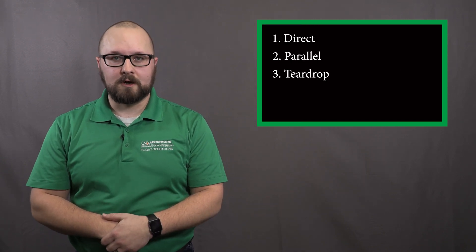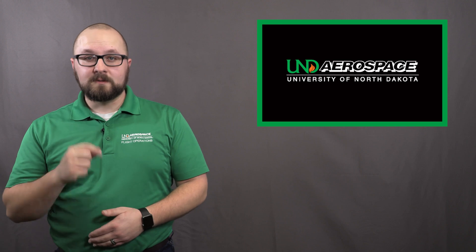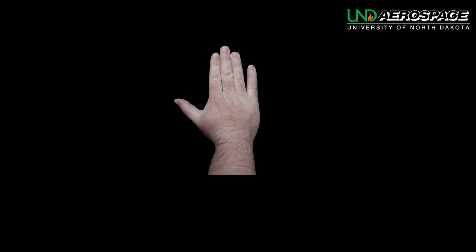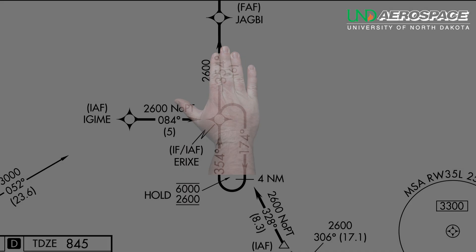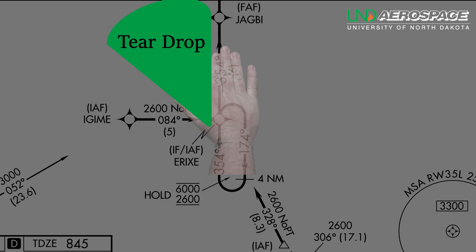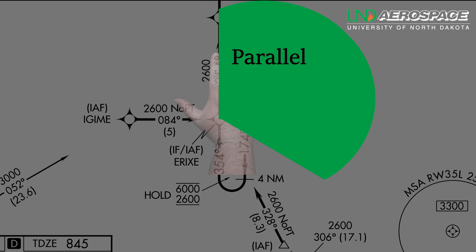The three methods are direct, parallel, and teardrop. To help simplify the decision-making process, I'm going to teach you the hand rule. Put your hand out like this. Imagine that your holding fix is at the base of your thumb. Imagine your wrist is the holding pattern. If you are coming from anywhere behind your thumb, you will use a direct entry. If you are between your thumb and index finger, you will use the teardrop entry. And if you are between your index finger and the top of your wrist, you will use the parallel entry.